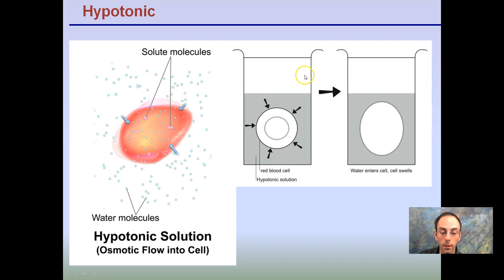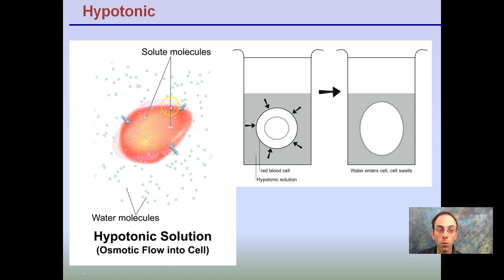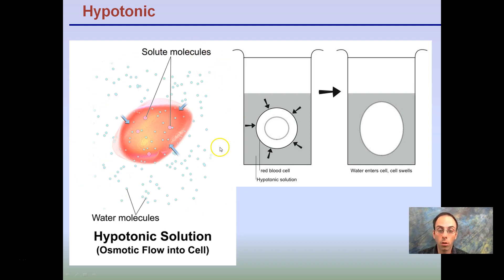Hypotonic is the opposite of that — osmotic flow is into the cell, causing it to swell up. In this case, there are more solute molecules inside the cell than outside. This could occur if you put something in pure distilled water, free of ions. This can cause cells to swell up, and if they're red blood cells, they can ultimately lyse or break apart.